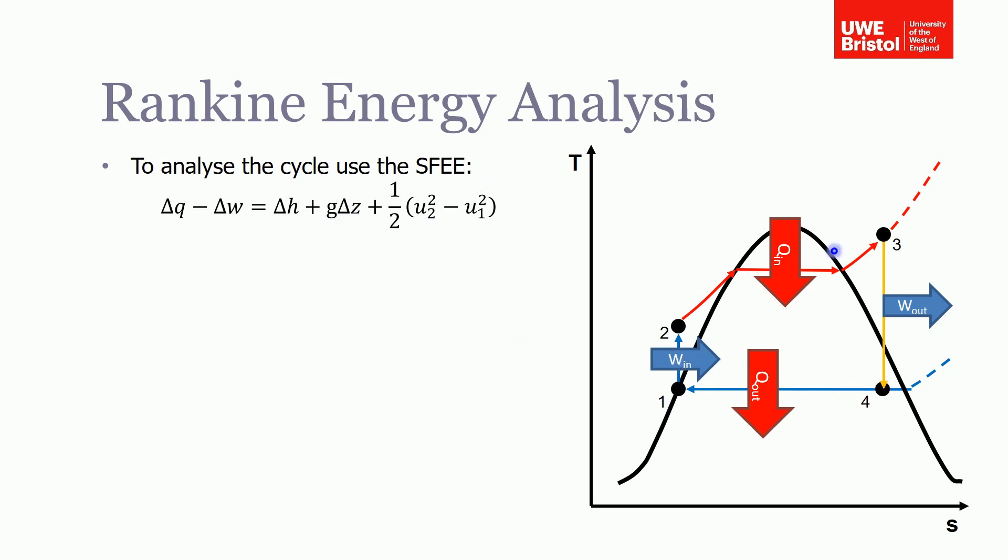Now as we go around this cycle we can make some assumptions. We can neglect the potential terms, which is pretty reasonable as long as we haven't got a massive height difference between our components, and also the kinetic term. Therefore this will reduce down to: the change in heat supplied minus work done is equal to the change in enthalpy. This is what we're going to use as we go right around the cycle from one to two to three to four back to one.